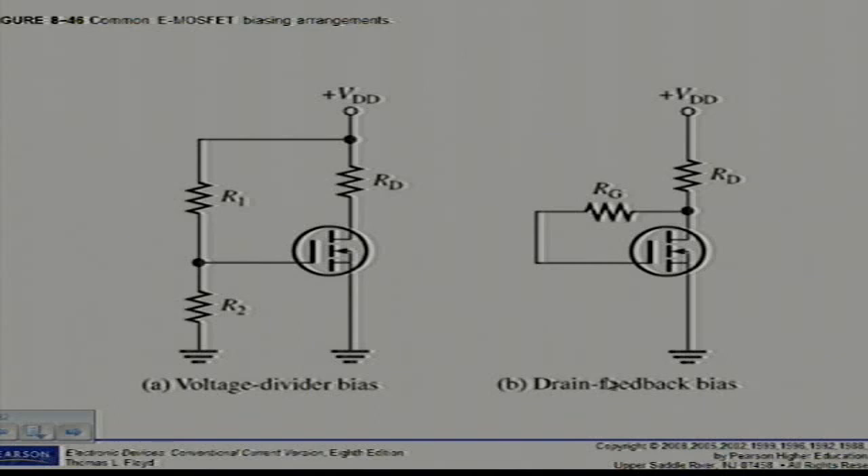And the equations, as you can see there on page 405, are familiar. If I want to determine VGS, voltage divider formula. Voltage drop over there, over R2, which is VGS, is R2 divided by R1 plus R2 times multiplied with the supply voltage.